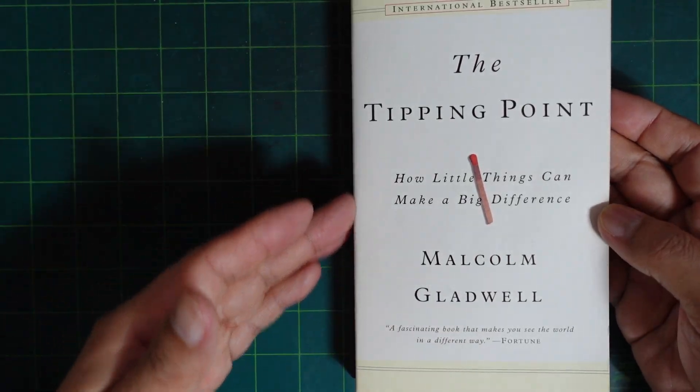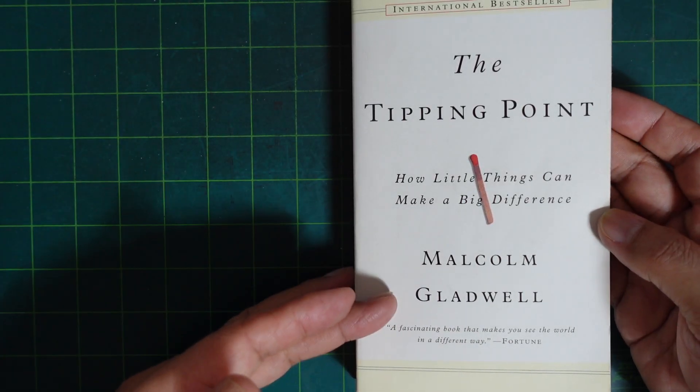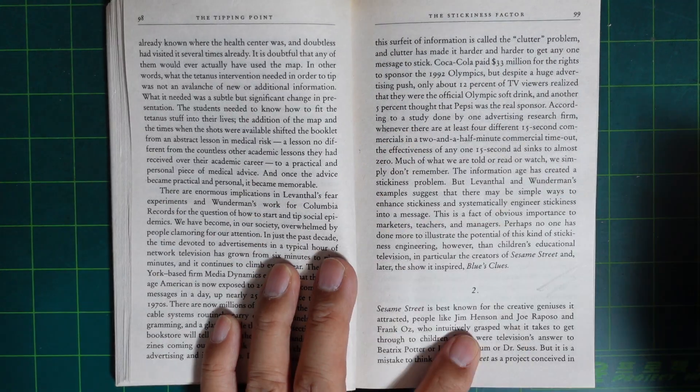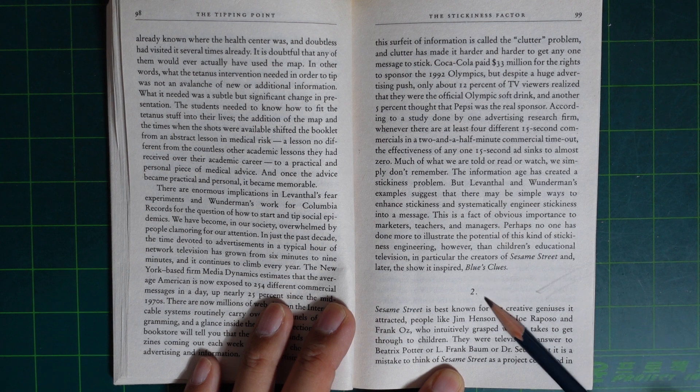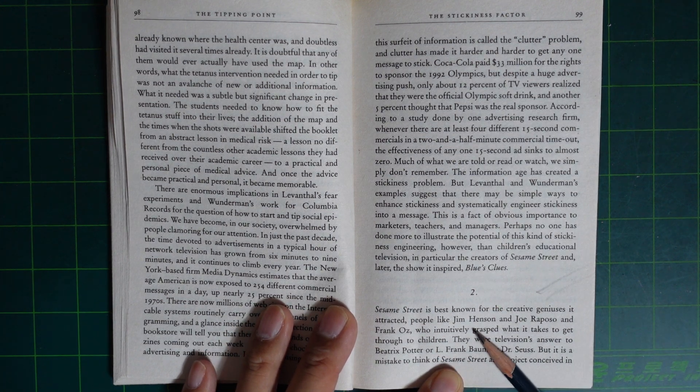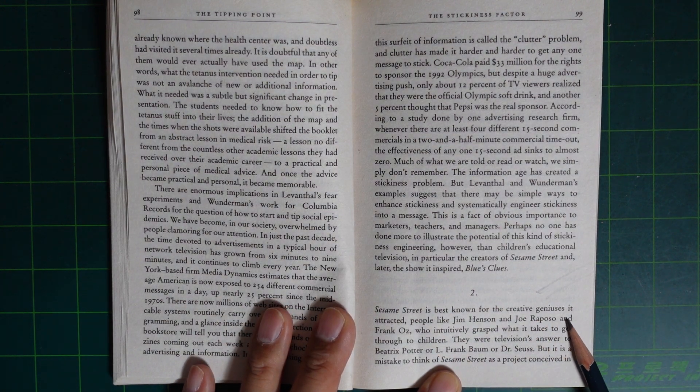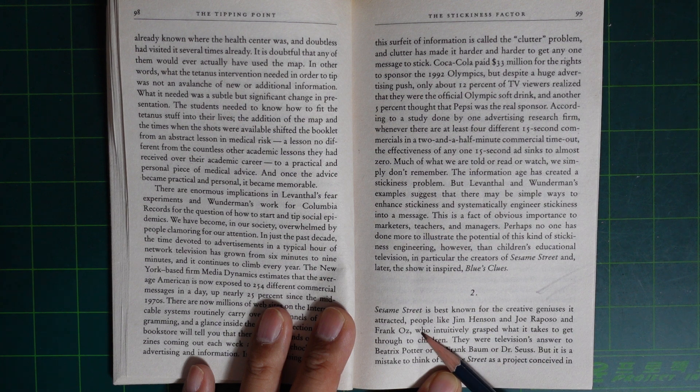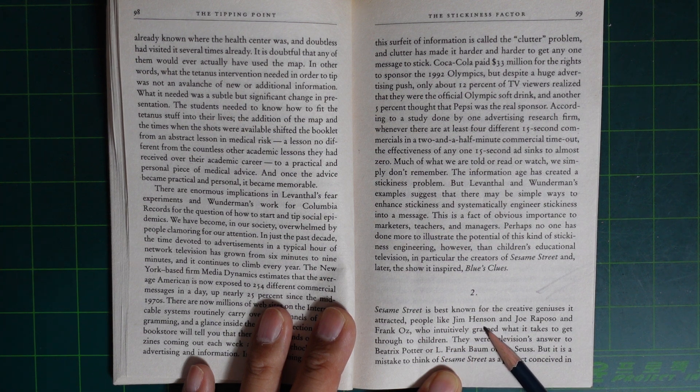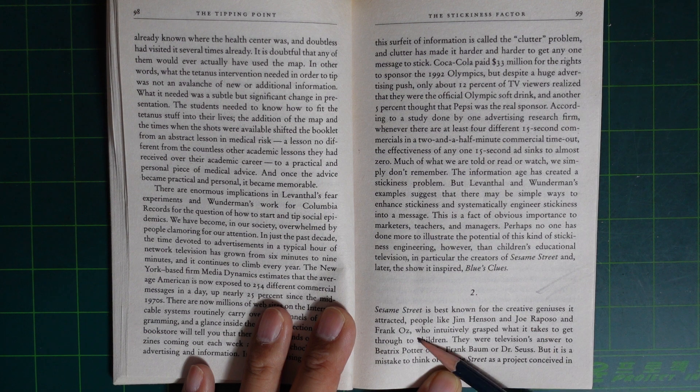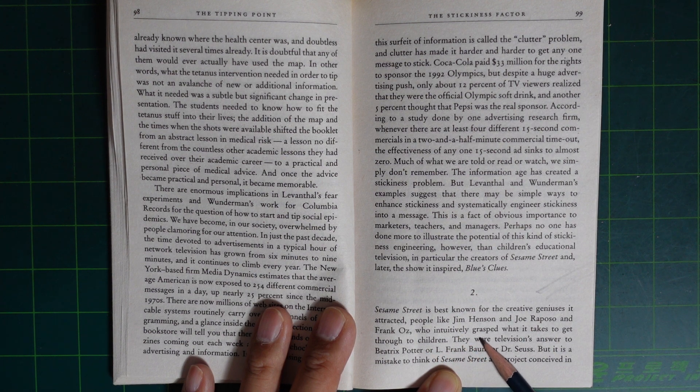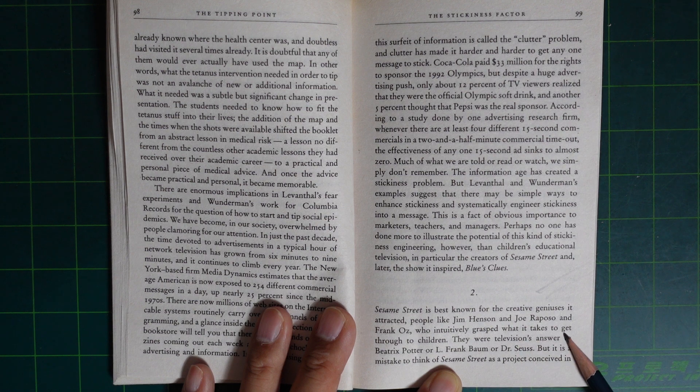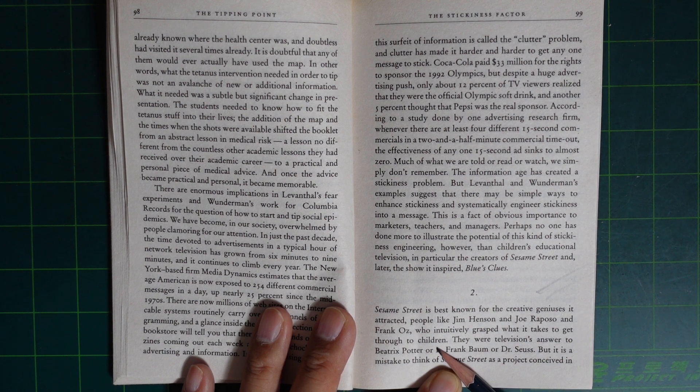The Tipping Point, Malcolm Gladwell, The Stickiness Factor. Sesame Street is best known for the creative genius it attracted - people like Jim Henson, Joe Raposo, and Frank Oz, who intuitively grasped what it takes to get through to children.